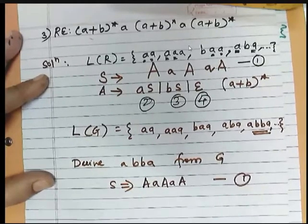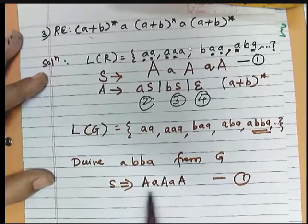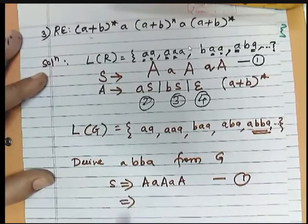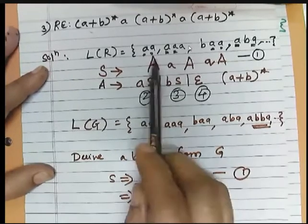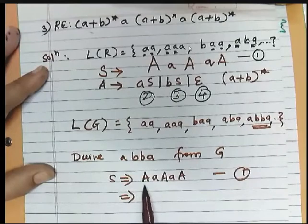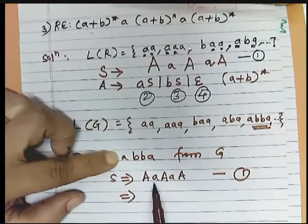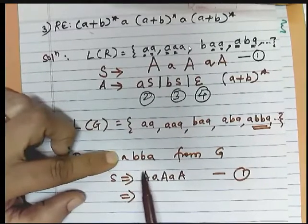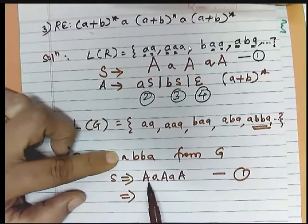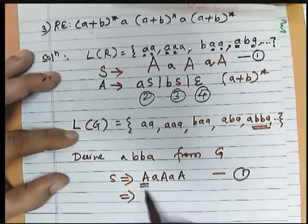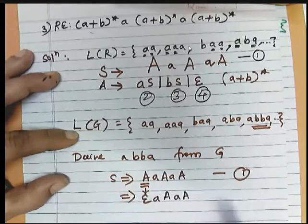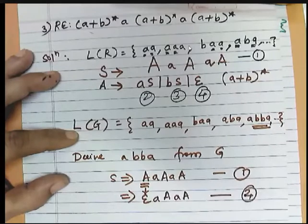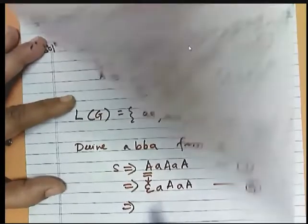Now I need to replace this A. So either I can use leftmost derivation or rightmost derivation. Since I want A, I will use leftmost derivation. This A is compulsorily present, so what is the replacement for this A? It is compulsory for me to use the production rule that keeps it going. So I will use that rule and move ahead. Next, it will become A...